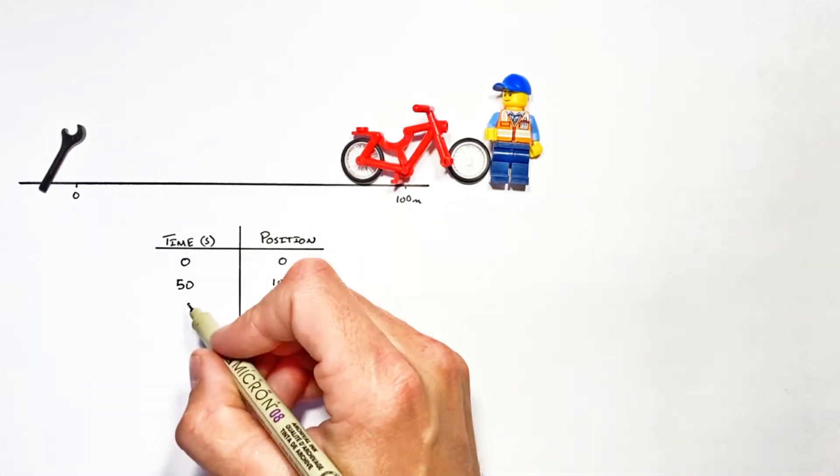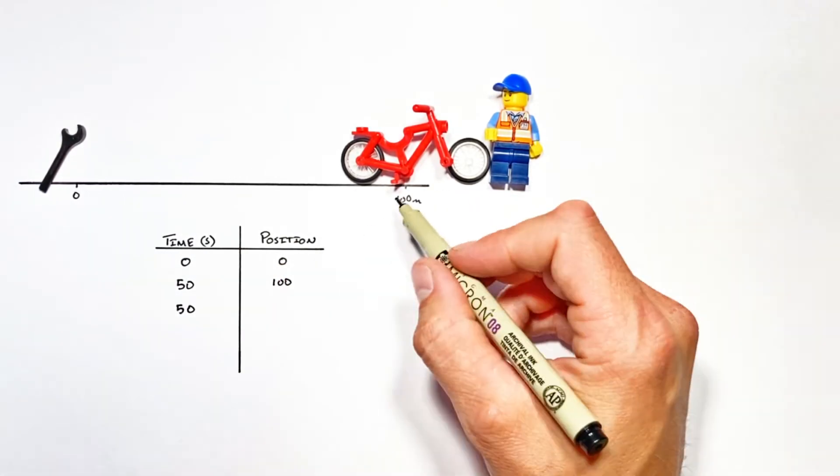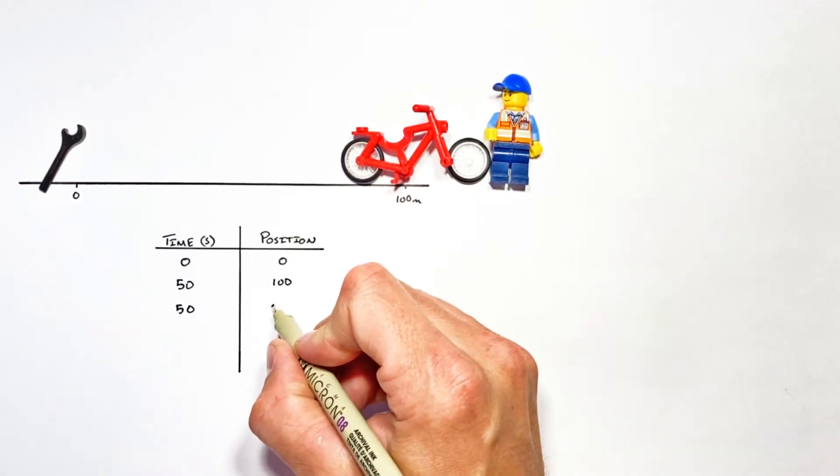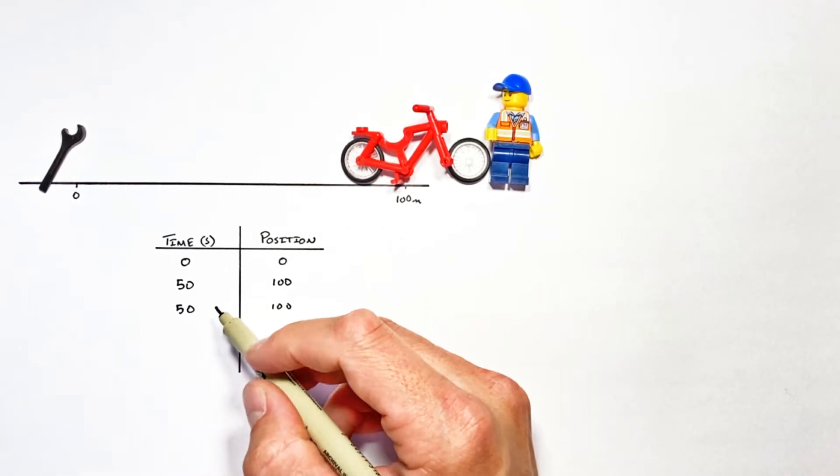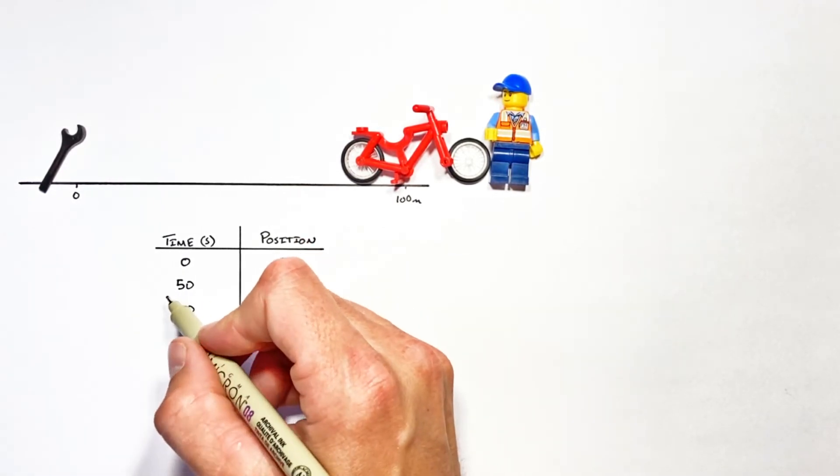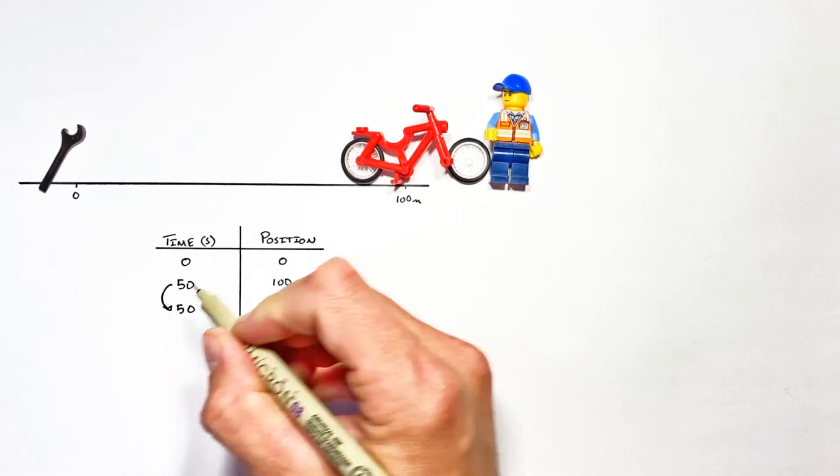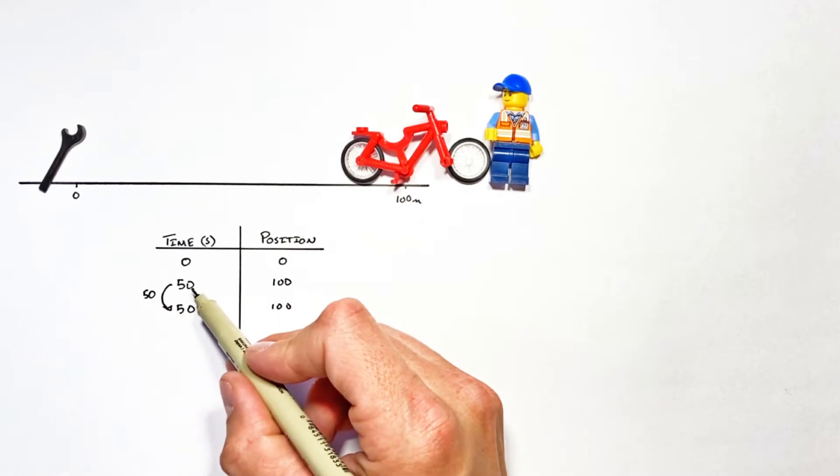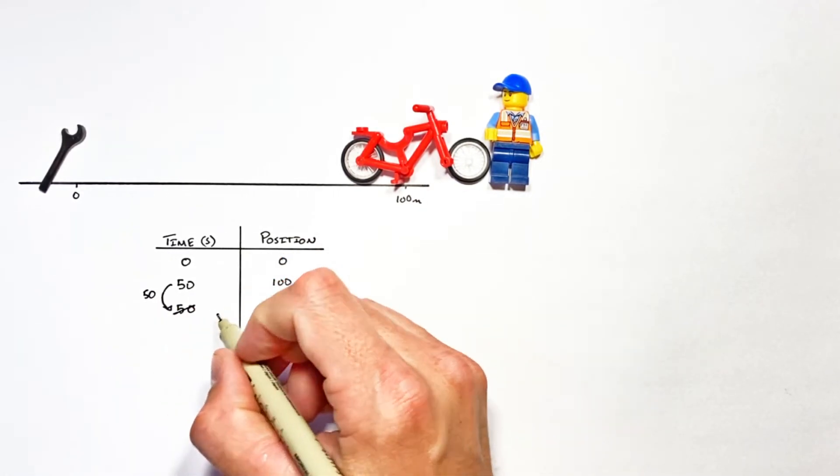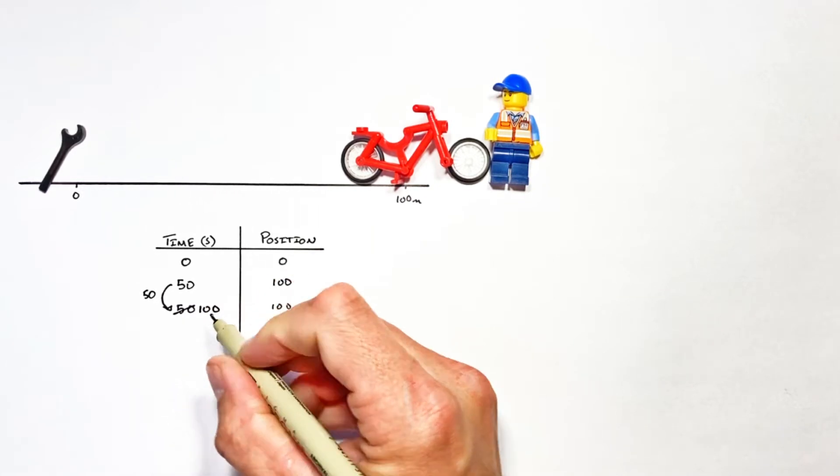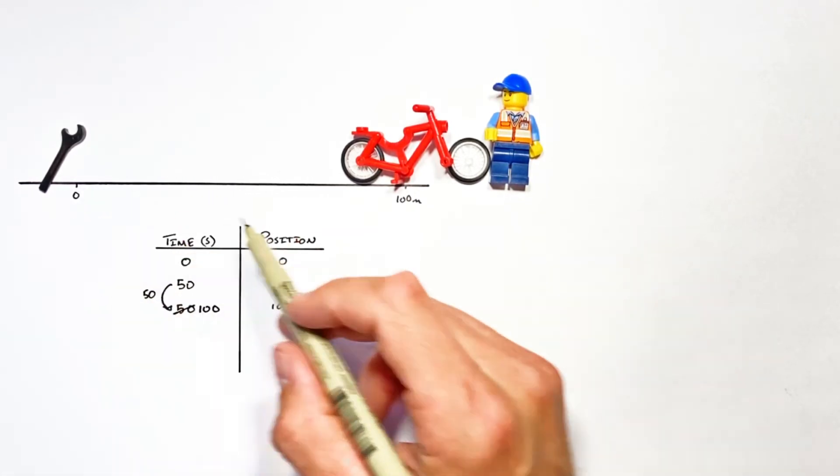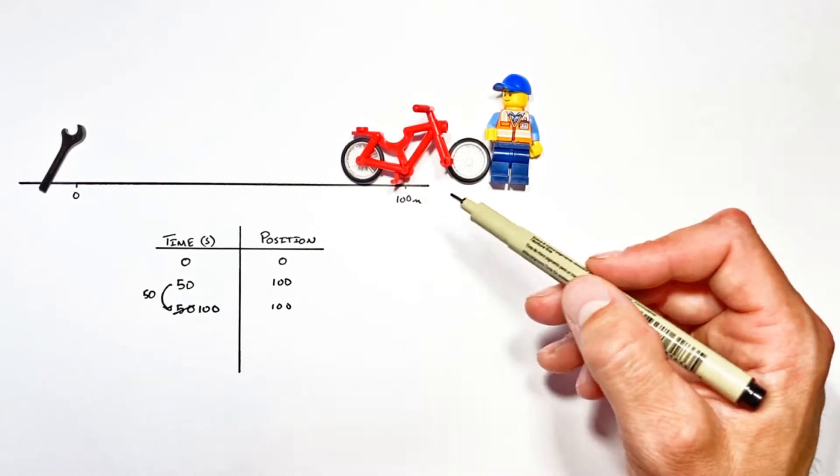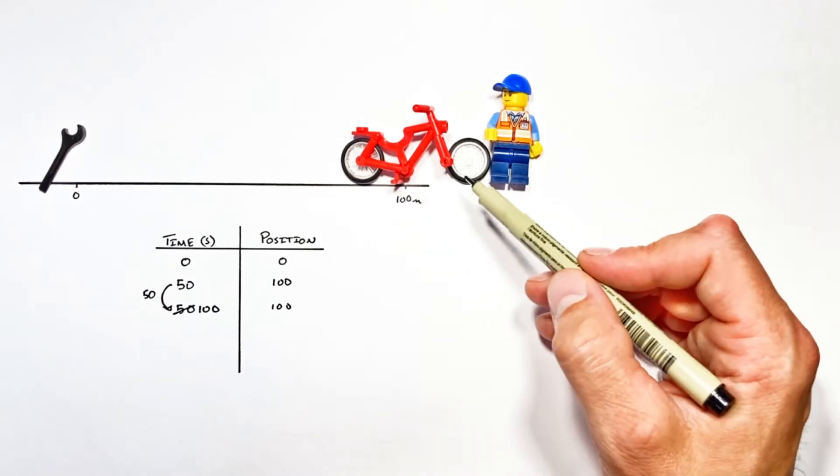Let's say he spends about 50 seconds here trying to fix his bike. Well that means after 50 seconds he's still at a position of 100 meters. Now you'll notice I put 50 right here. The fact of the matter is 50 seconds is the elapsed time that he spends right here doing nothing. 50 seconds go by which is gonna be 50 plus another 50 seconds. This is actually a time of 100 seconds, so 100 seconds into our little epic journey he's still 100 meters out.